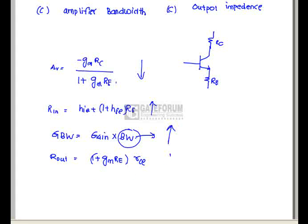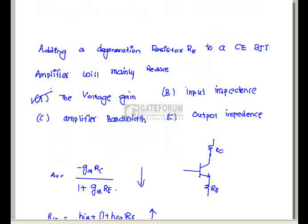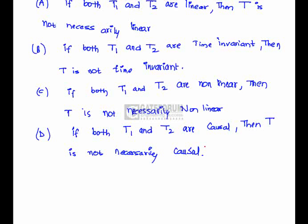Question is: two systems T1 and T2 are cascaded to get the system T as shown in the figure. Which of the following statement is true? Statement A: If both T1 and T2 are linear, then T is not necessarily linear.